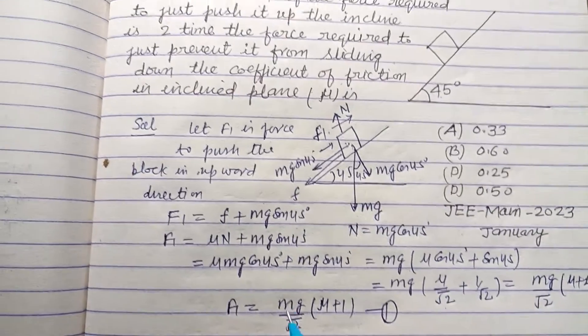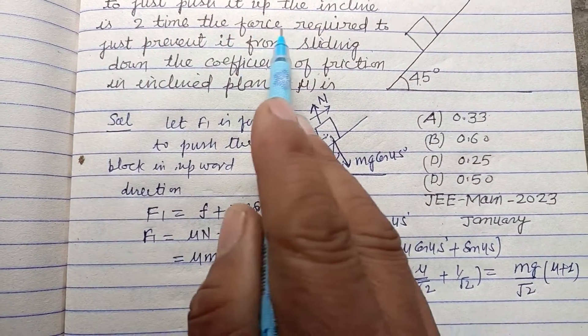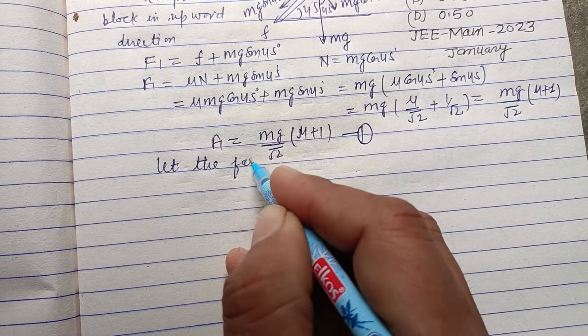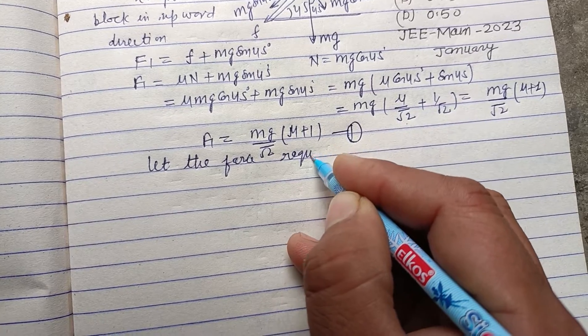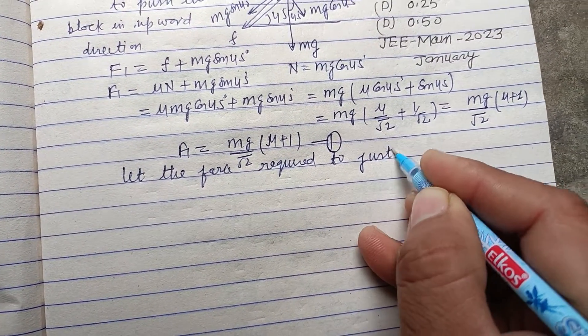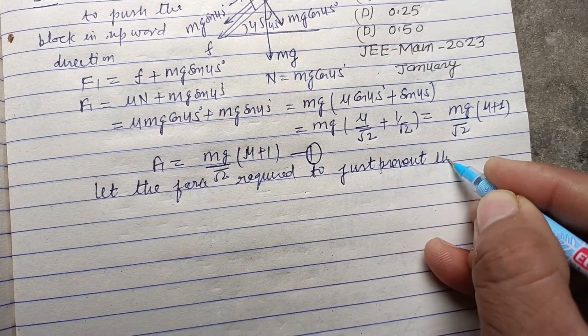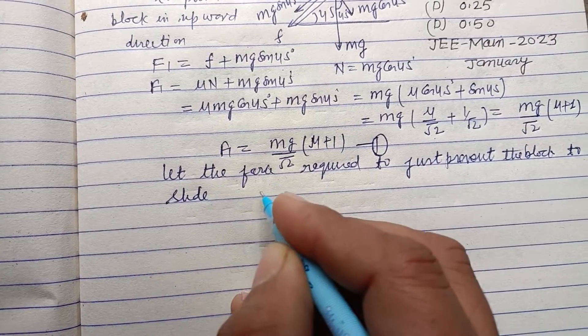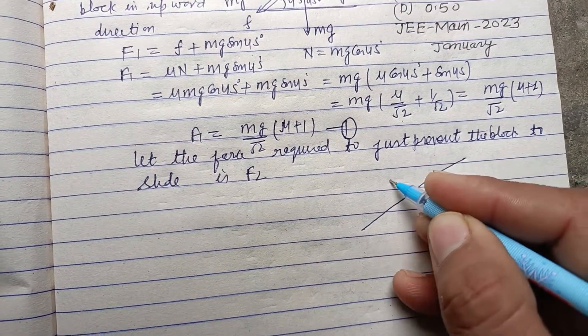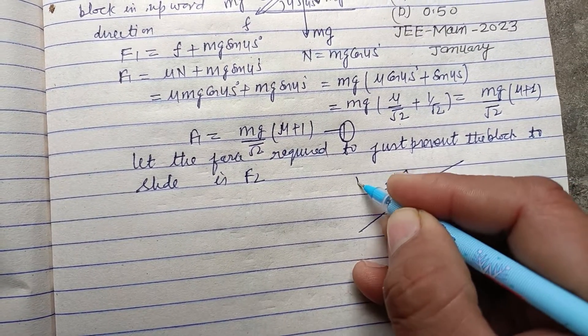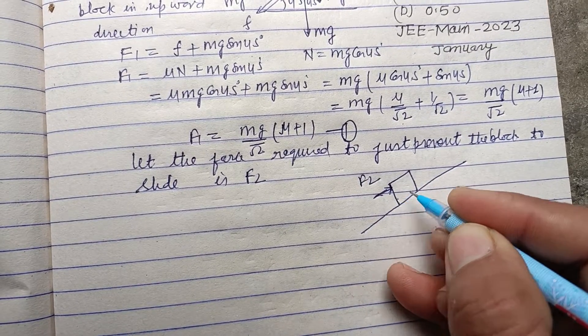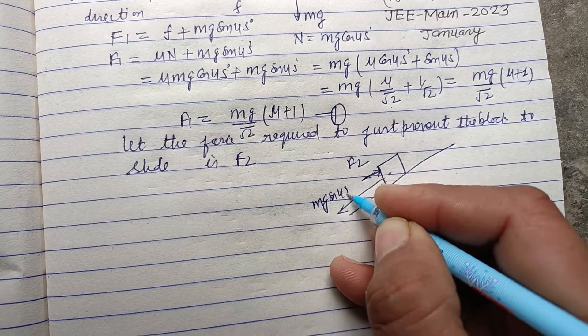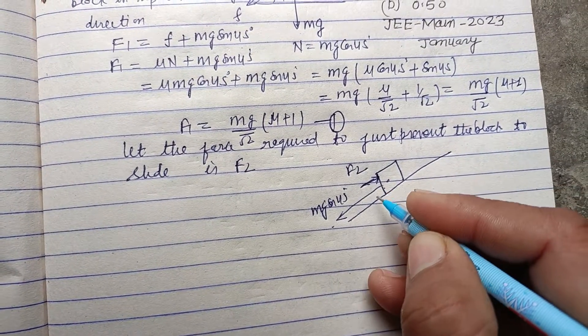Now, if two times the force required to just prevent it from sliding, let the force required to just prevent the block to slide down is F2. Now again we make the figure. This is F2 in upward direction. If we want to prevent it, because due to its Mg sin 45 this wants to come out in downward direction.